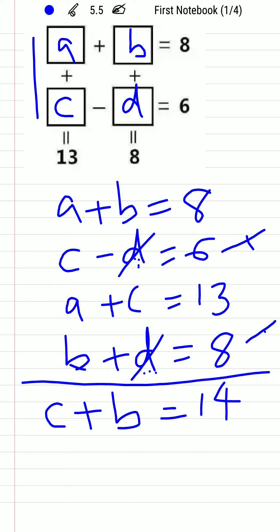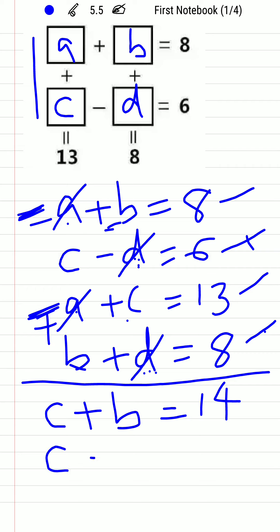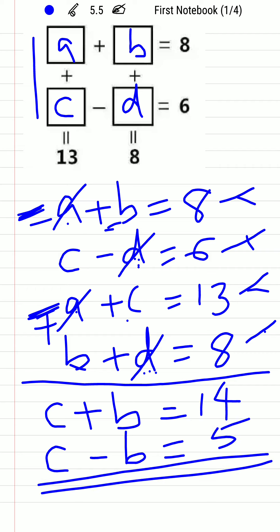Now consider equations 1 and 3 — a is common in both. If we subtract equation 1 from equation 3, the a terms cancel. We get c − b = 13 − 8, which equals 5. So now we have two equations with two unknowns, c and b.